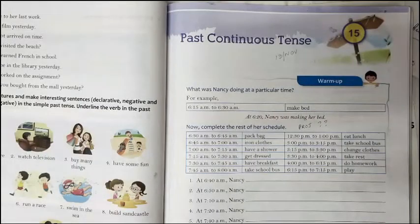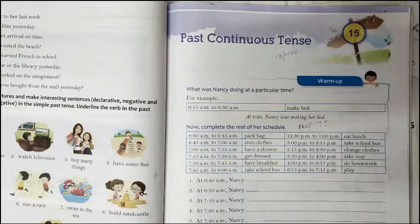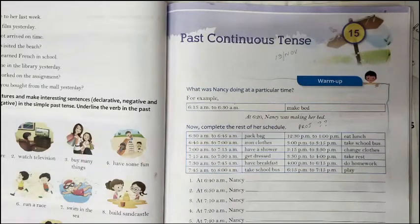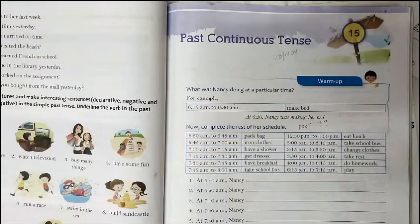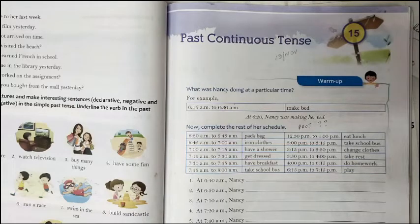Hello class 5. The next lesson in our textbook is the past continuous tense. The past continuous tense is chapter 15, on page 69. So take out your books, look at page 69, chapter 15, the past continuous tense.